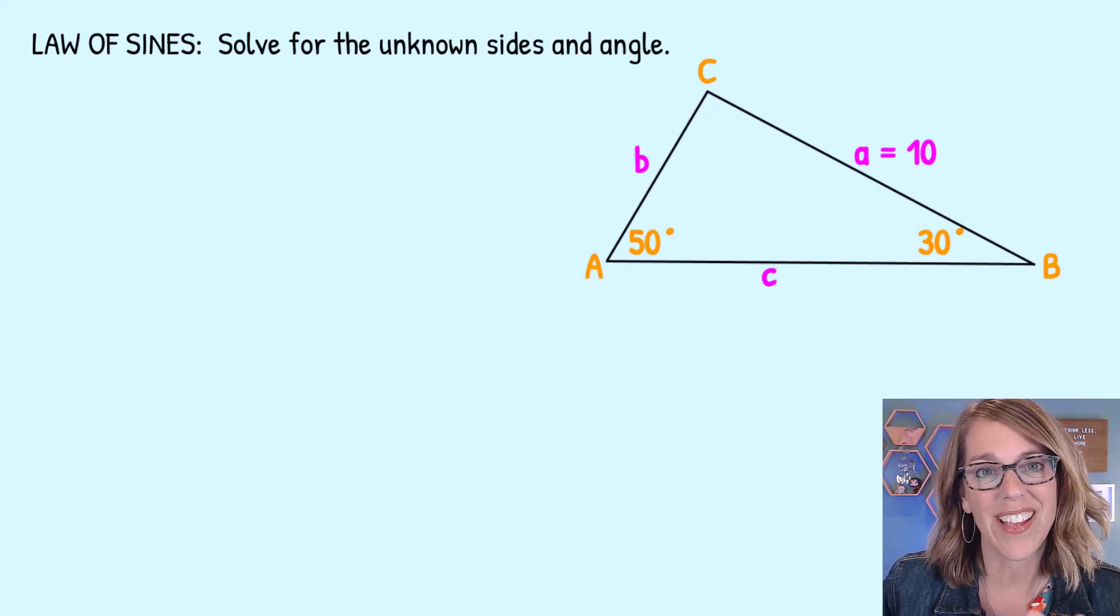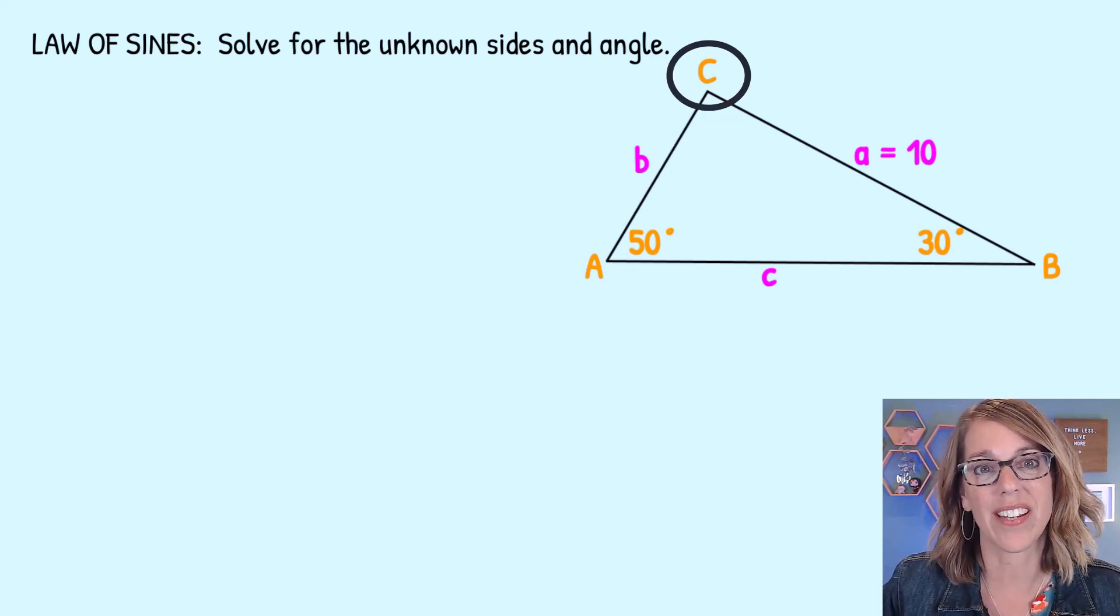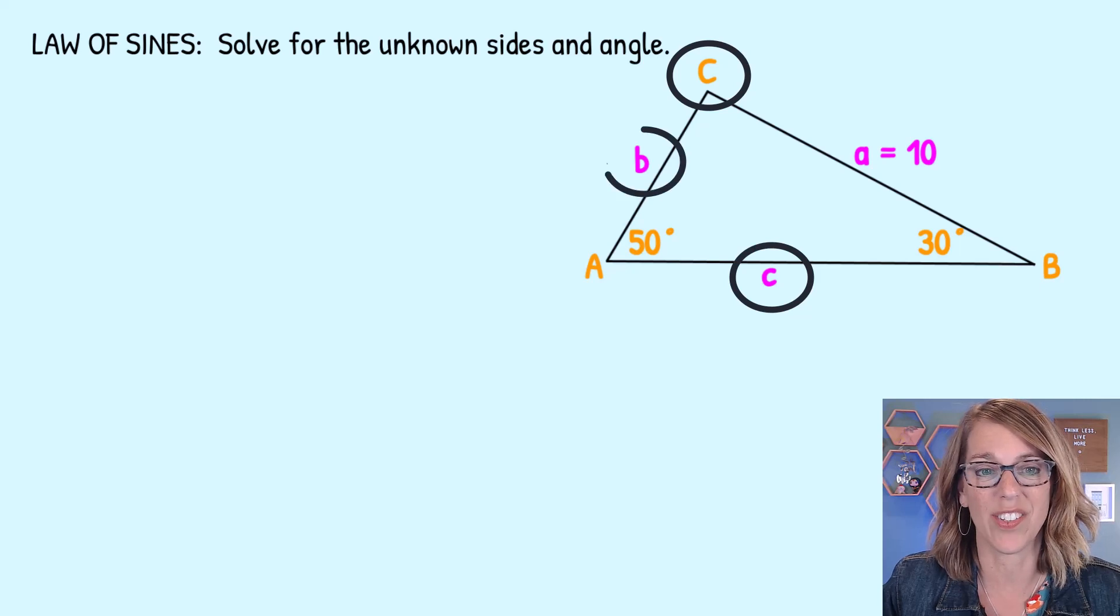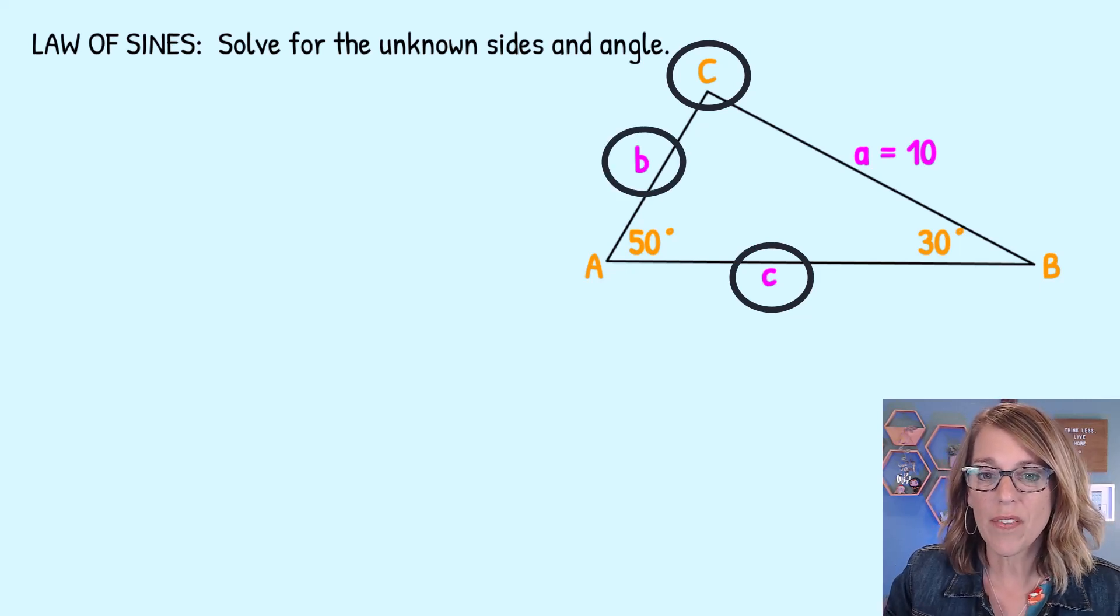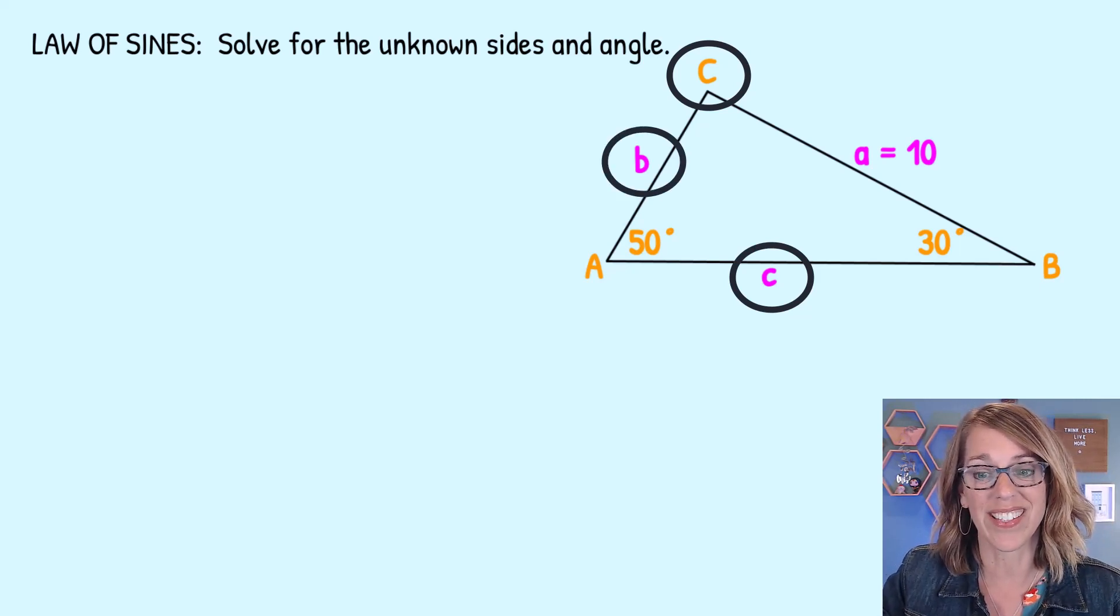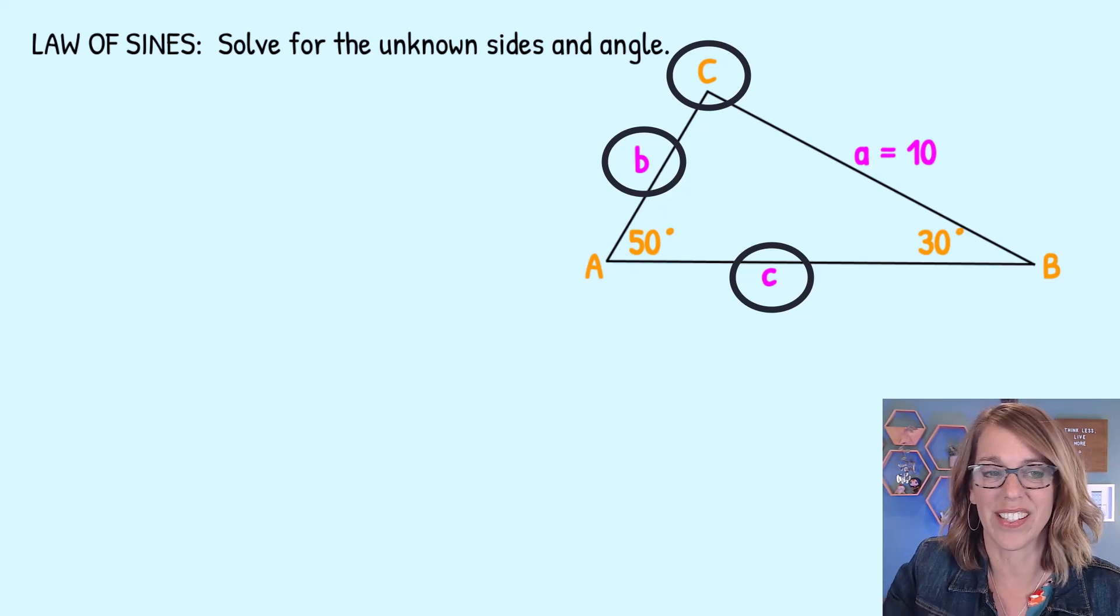We need to solve for the missing angle C and the missing sides C and B in this triangle. Now as I'm solving for one of the missing sides, I need to use the Law of Sines.